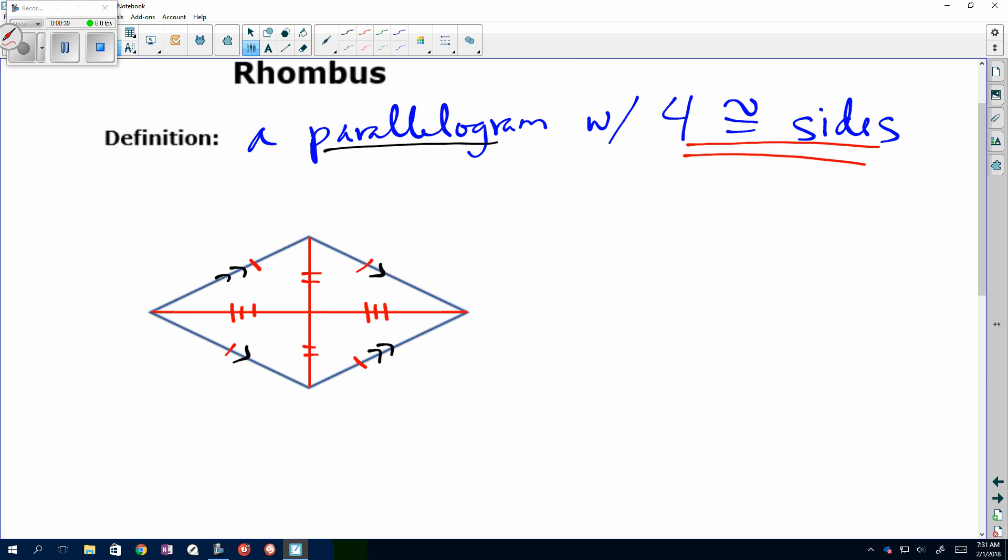And by definition, if it's a parallelogram, opposite angles, so my obtuse angles are congruent to each other, and my acute angles are congruent to each other.